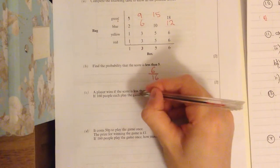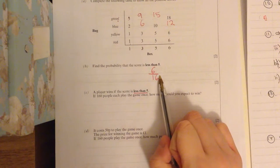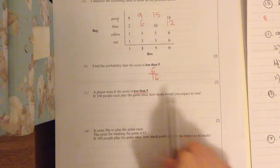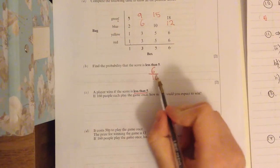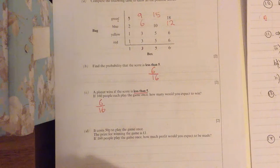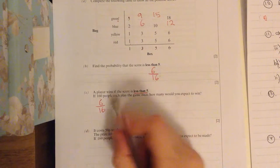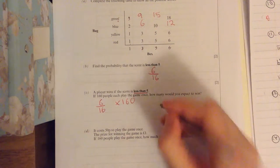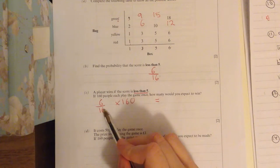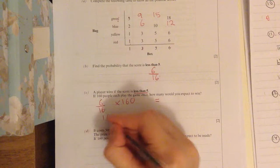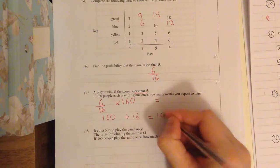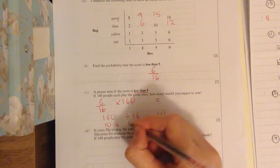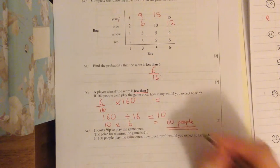If a player wins, it is less than five. If hundred and sixty people play, how many would you expect to win? So we know that six out of sixteen people win, because we've worked that out here. And a hundred sixty of those play. So six out of sixteen times a hundred and sixty. Now remember, this is a non-calculator. So what I would do next is this means divide by sixteen. So I do hundred and sixty divided by sixteen is ten, so divide by the bottom and then times by the top. So do ten times six is sixty people.